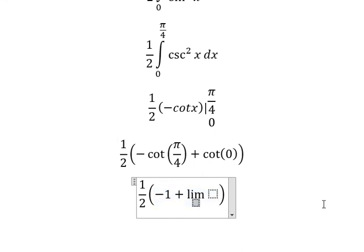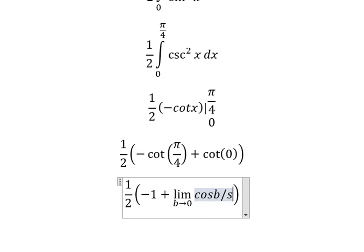That's b approaching zero of cot(b). We know that cot(b) is cos(b) over sin(b).